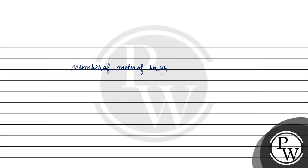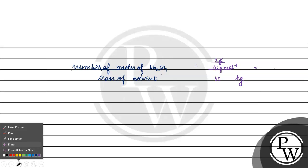Molality. What happens for Na₂SO₄? Mass of Na₂SO₄ by its molar mass, which is 142 per mole, by mass of solvent 50g. To convert g to kg, we multiply by 10 to the power minus 3. Grams cancel out.